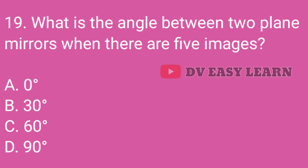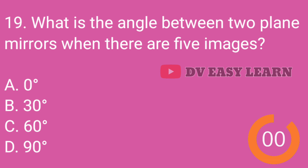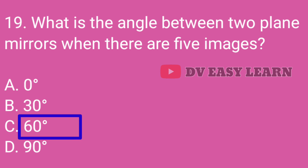Question No. 19: What is the angle between two plane mirrors when there are five images? Correct answer: 60 degrees.